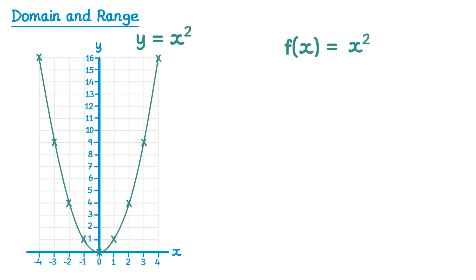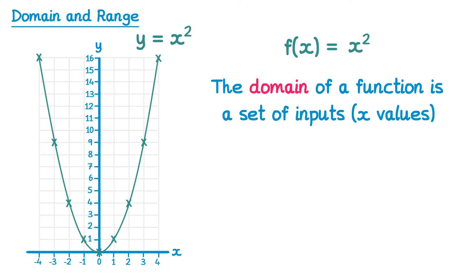Now that we've graphed this function we can talk about the domain and the range. The domain of a function is the set of inputs — you could think of it as the x values. For this graph we had the x values from negative 4 to 4. But the domain of the function f of x equals x squared is actually all real values of x, because you could put any number into this function. You could even put in 1 million, or negative 47 — all values of x would work, so the domain is all real values of x.